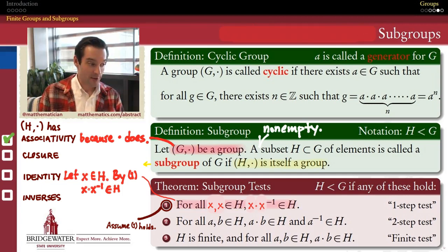so the inverse property of G is all that we're using to substantiate this. X times X inverse is the identity element of G. And therefore, by this logic, the identity element of G belongs to my subset H. And that verifies the identity property for the subset H.